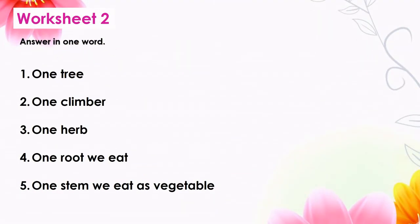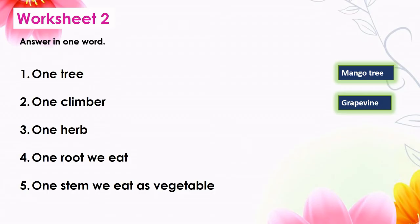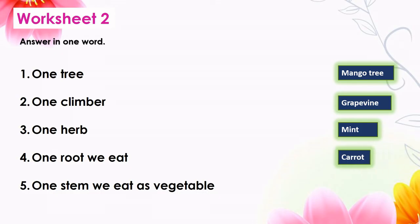Worksheet 2 — answer in one word. Question 1: Name one tree. Answer: mango tree. Question 2: Name one climber. Answer: grapevine. Question 3: Name one herb. Answer: mint. Question 4: Name one root we eat. Answer: carrot. Question 5: Name one stem we eat as a vegetable. Answer: potato.